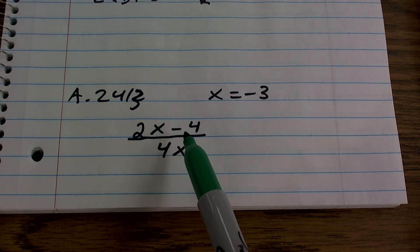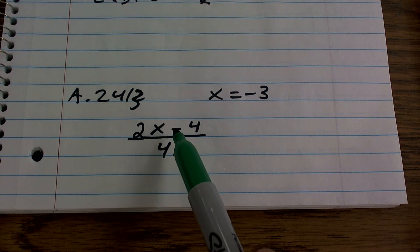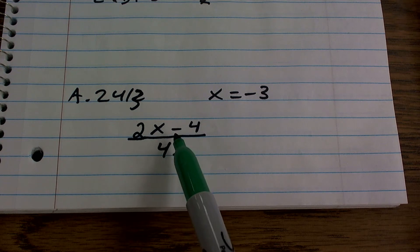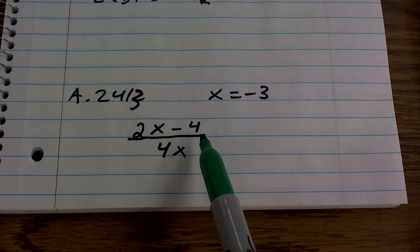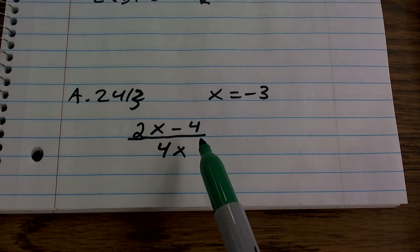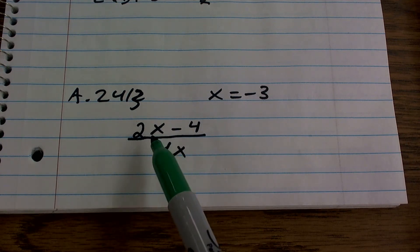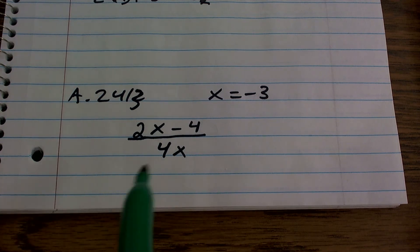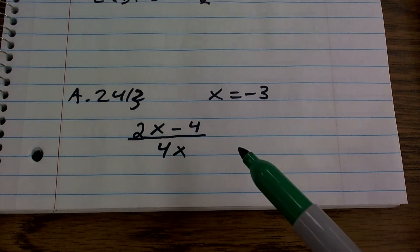We notice that we have two variables, two unknowns. I could say this as 2 multiplied by a number minus 4, all divided by 4 times that number. Or I could say the quotient of 2 times a number minus 4 and 4 times a number. That's just going back to translating practice.